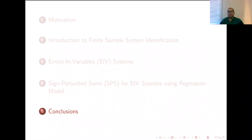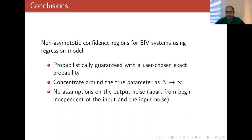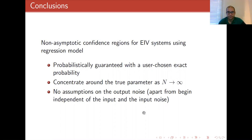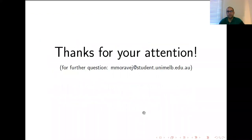To conclude: I proposed a non-asymptotic confidence region for EIV systems using a regression model. The confidence region is probabilistically guaranteed — it includes the true parameter with exact probability. It concentrates around the true parameter, and any parameter not corresponding to the true value will be excluded from the confidence region as the number of data points goes to infinity. In this approach, there are no assumptions about output noise — it can be correlated and non-zero mean. Thanks for your attention.